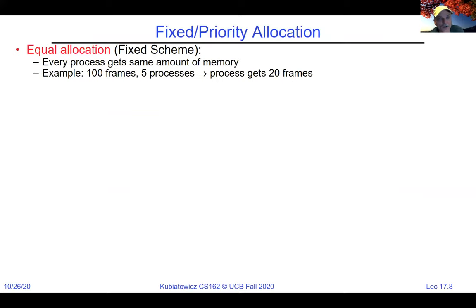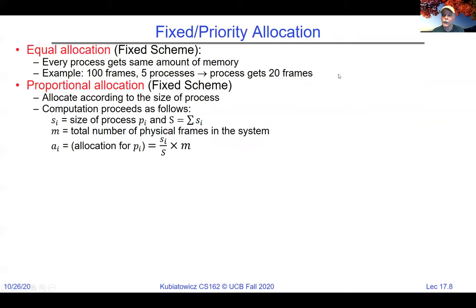One option is every process gets the same amount of memory — a fixed scheme. For example: 100 frames of physical memory, five processes, each gets 20 frames. Another is a proportional allocation scheme where the bigger process, with the most virtual memory needs, gets more memory. We could allocate with a proportionality constant: S_i is the size of process P_i in total virtual pages, so we assign (S_i / sum of all sizes) times the total memory to that process.